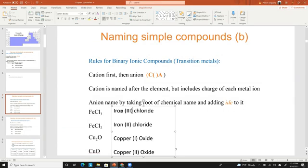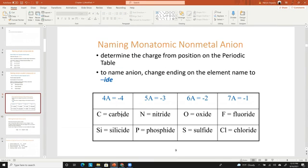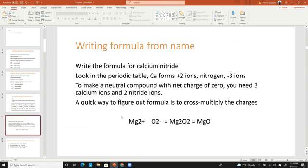For the iron with a +3 charge it would simply be iron three chloride, for the +2 charge iron two chloride. The -ide ending comes after the name.